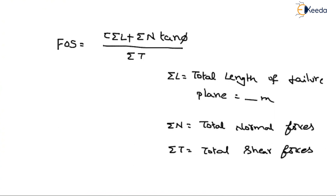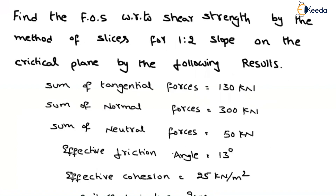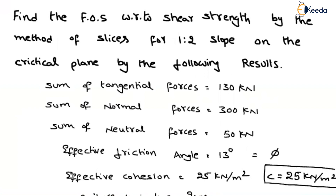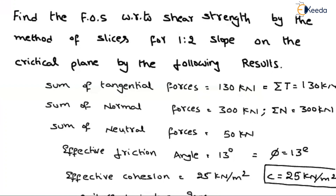Now let us go through the question and note the values. The cohesion C is given as 25 kilo Newton per meter square. The friction angle φ is equal to 13 degrees. The tangential forces, represented by summation of T, are equal to 130 kilo Newton. Summation of normal forces N equals 300 kilo Newton. And summation of neutral forces, meaning pore water pressure, summation of U equals 50 kilo Newton.